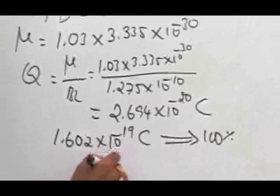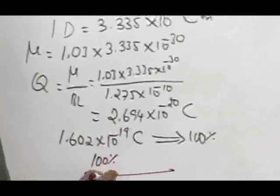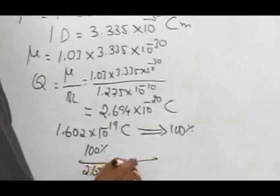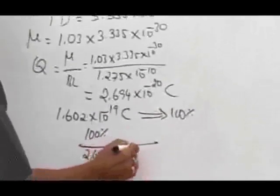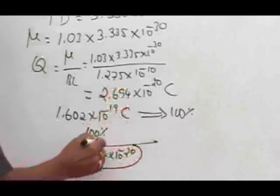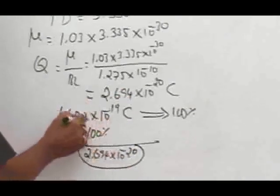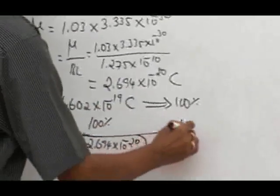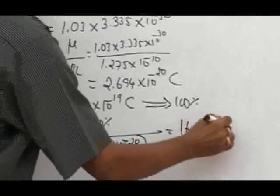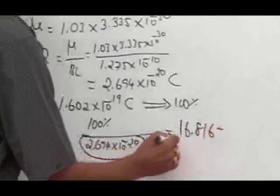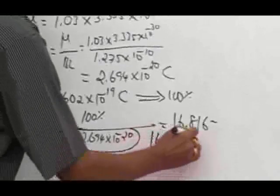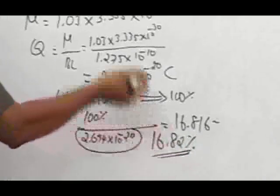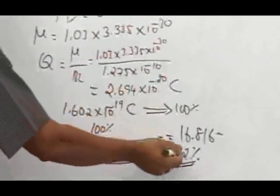For the charge 2.694 × 10^-20, we calculate the percentage ionic character. For 1.602 × 10^-19, 100%. For this much, how much? If you solve for that, you get 16.81 and something, and when it is rounded off, we have 16.82%. Therefore, we can conclude the percentage ionic character in hydrogen chloride is 16.82%.